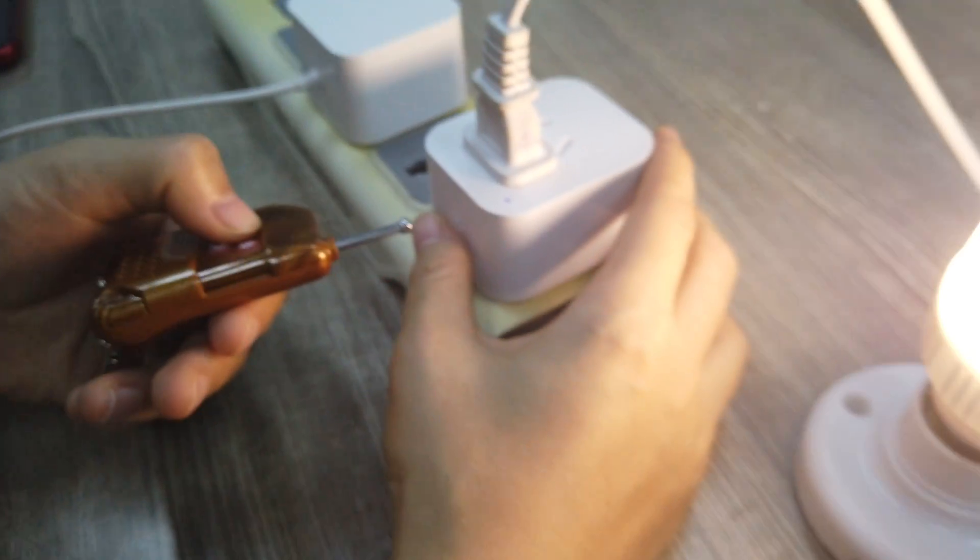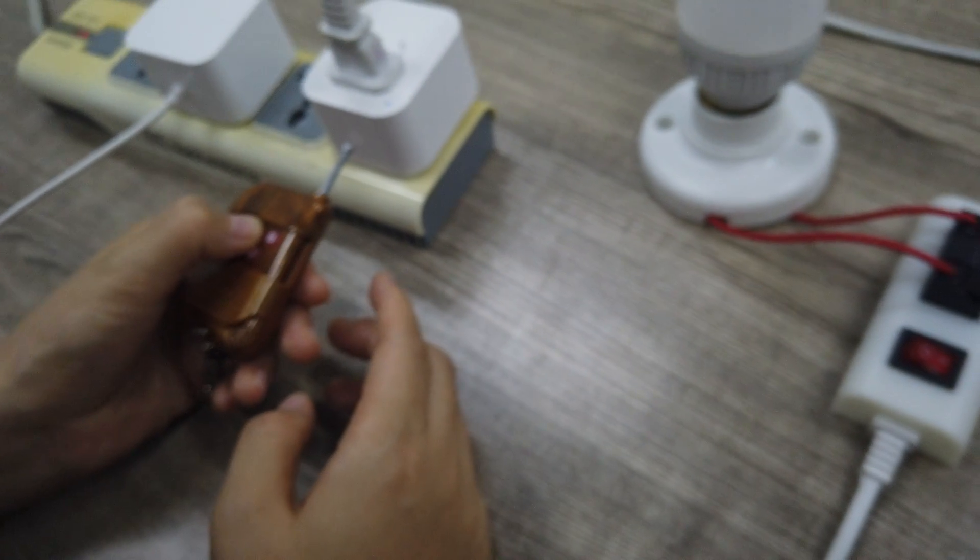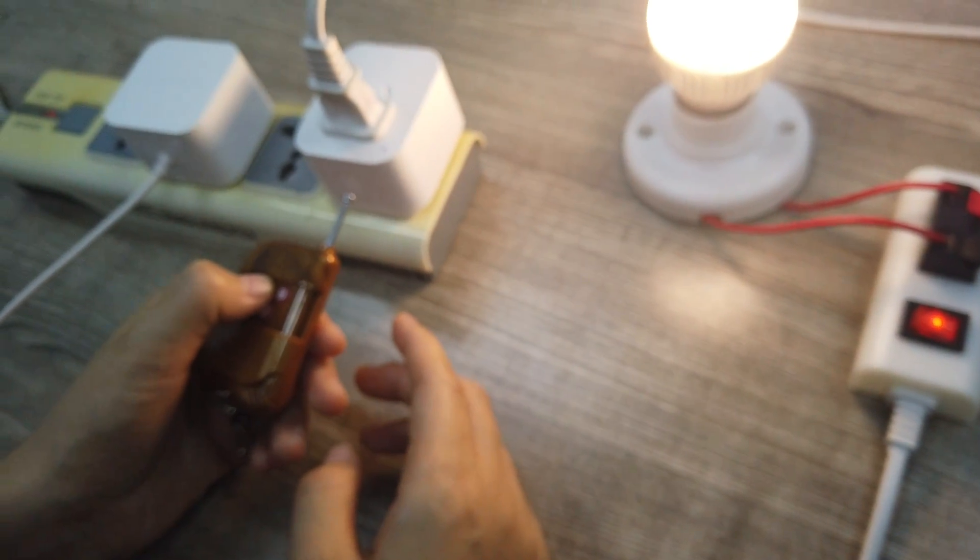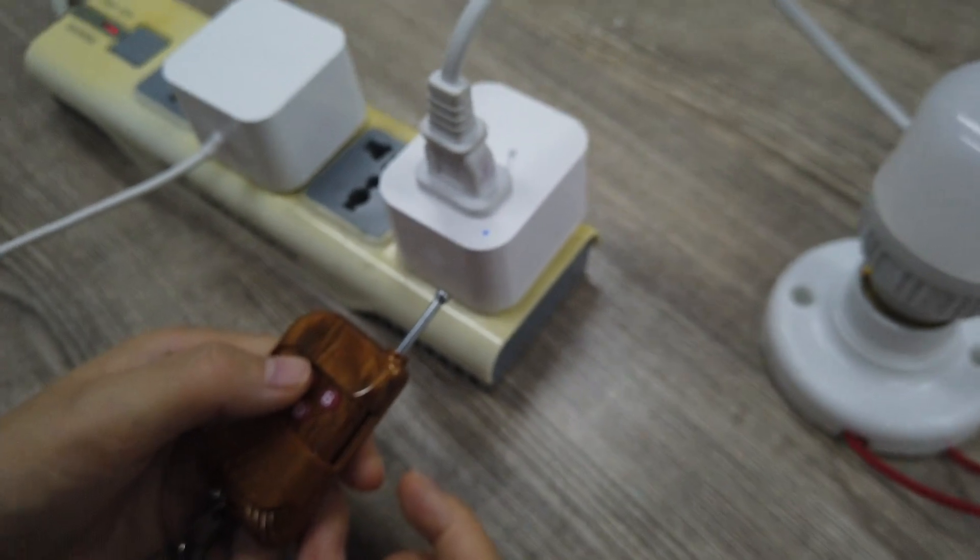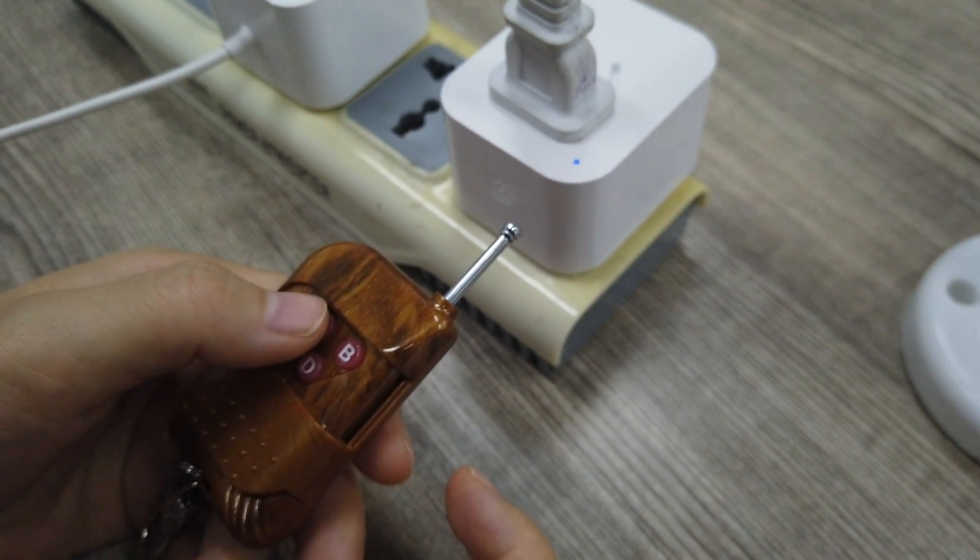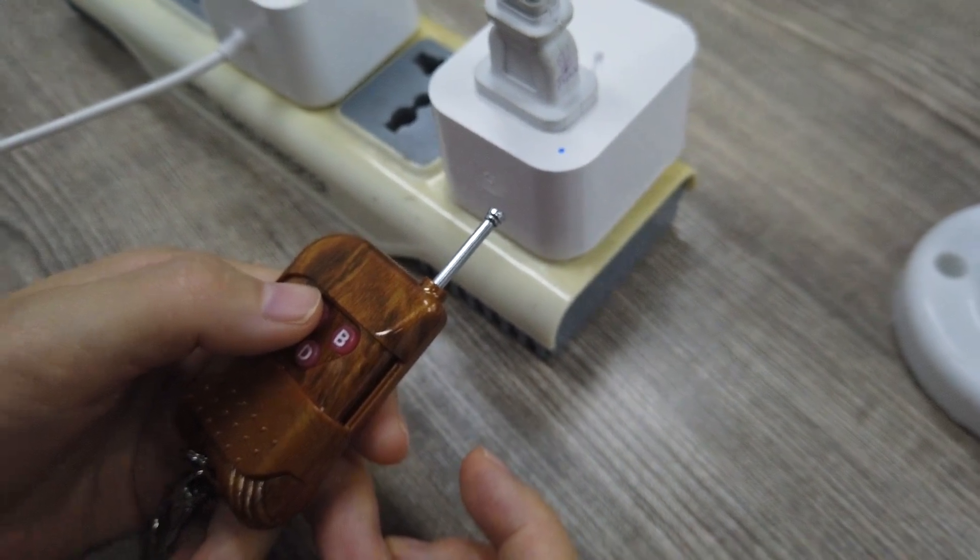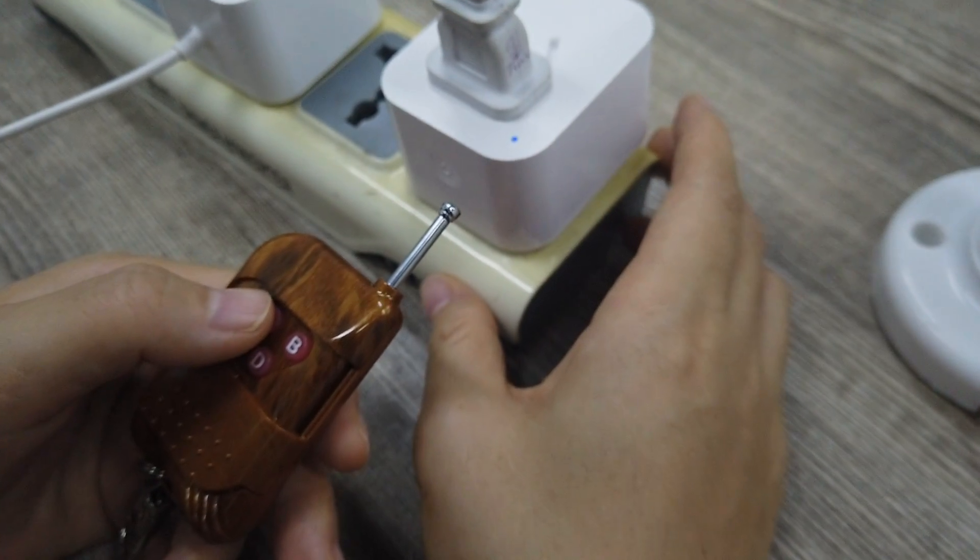And then we can see we can control the smart socket, turning it on and off. The second function I will teach you is how our smart socket can be controlled by the remote. We just press three times.